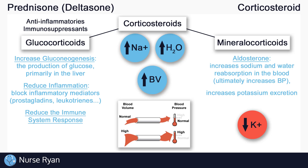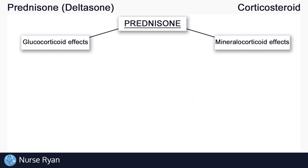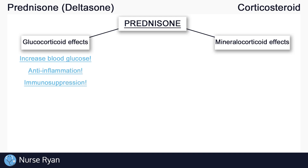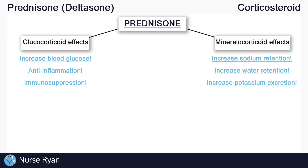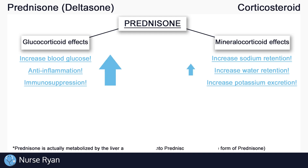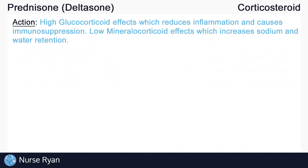Now let's finally get into prednisone. Prednisone is a corticosteroid that actually has both glucocorticoid and mineralocorticoid effects. So in some ways it can do all of what we talked about: raising blood glucose levels, anti-inflammation, immunosuppression, increasing sodium and water retention, and increasing potassium excretion. Primarily though, prednisone has a much higher glucocorticoid effect than it does a mineralocorticoid effect. This means that prednisone is great for reducing inflammation, but it's not so good at actually retaining much sodium and water.